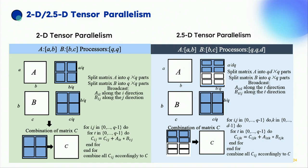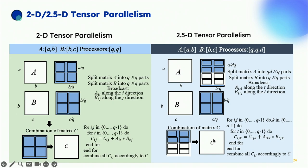If we have enough memory to store more than one copy of data A, B, and C, there's another algorithm called 2.5D. It breaks up the three nested loops defining matrix multiply, replicates matrices A, B, and C as often as memory permits, and has different processors compute different contributions to the final C matrix, which are summed at the end. This reduces communication costs even further, beating SUMMA by a factor that grows with the number of replicas. We can also prove this is optimal.